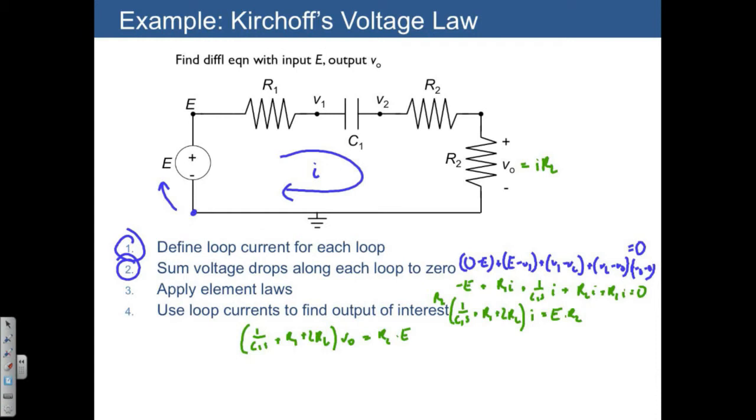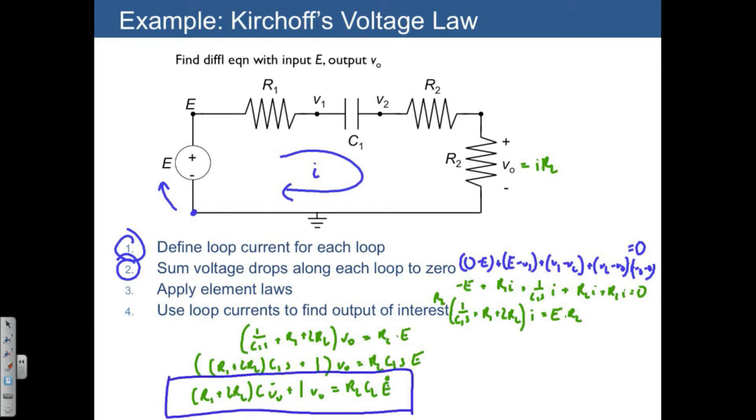Now I have a 1 over C1S, so I'm going to have to multiply both sides of my equation by that. So we get R1 plus 2R2 times C1 times S plus 1. All of this multiplies by VO, and that's going to be equal to R2C1S times E. If we rewrite this as a differential equation, we end up with R1 plus 2R2 times C times VO dot plus 1 times VO is equal to R2C2 times E dot. And notice there's a time derivative of the input function E here, and that does happen, and that's a completely legal thing. So we have a differential equation in input-output form, VO is the output, and E is the input.